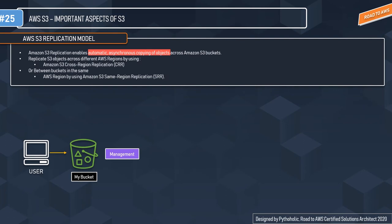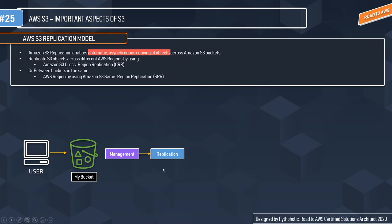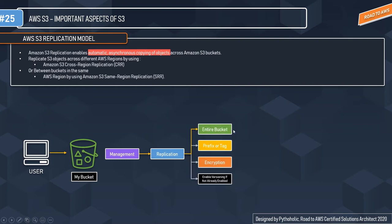Let's see the visualization. If you are a user and owner of a bucket, you use the bucket's management policies to create replications — you must specify the source bucket and the target bucket. You can configure CRR or SRR depending on your requirements. You can replicate the entire bucket, or choose a specific prefix or tag for the objects to replicate, and you can also provide encryption for the objects being replicated.